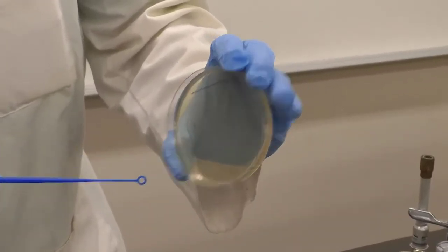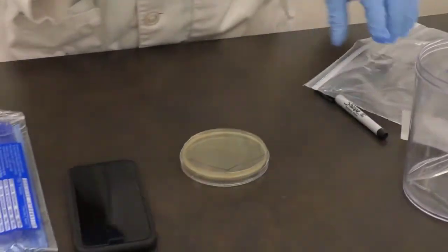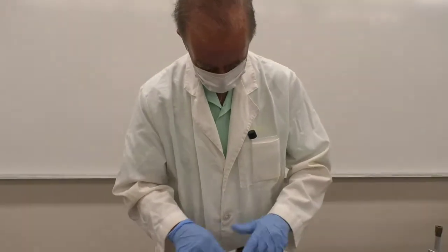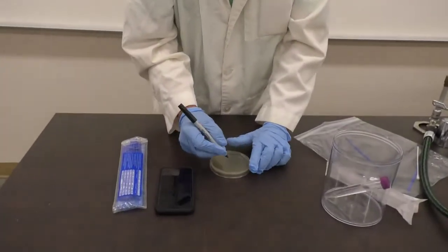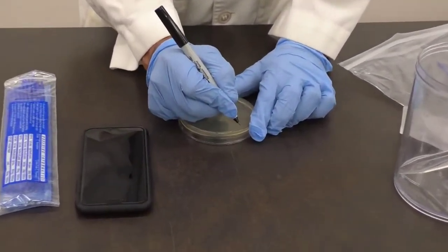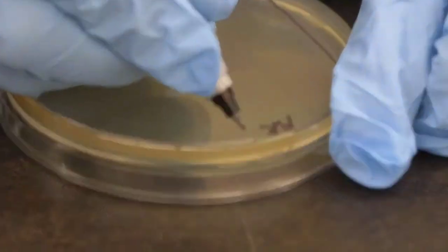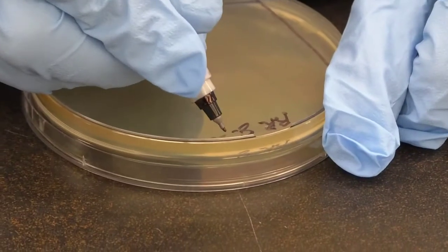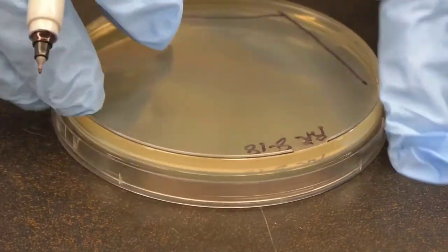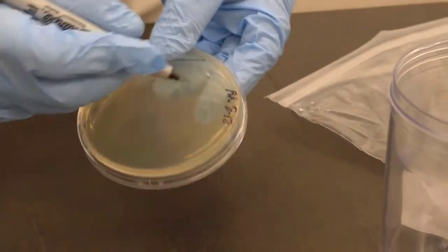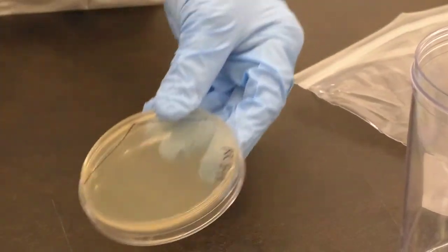All right, the other thing you always want to do is identify your plate with whatever you can. So I'm going to put my initials and the date. You notice how I wrote off to the side so as to not obscure what's growing on the plate. So always write to the side of the plate.